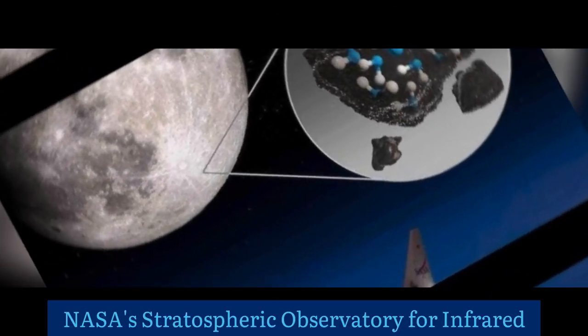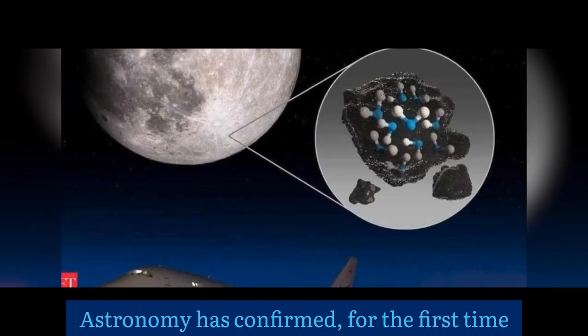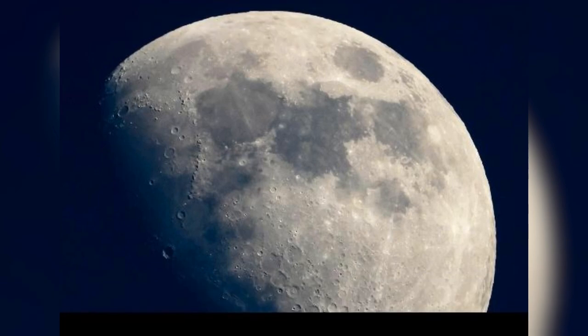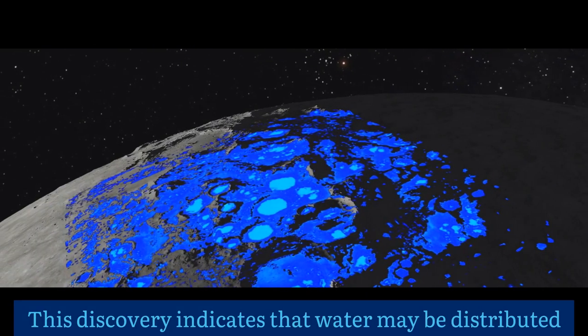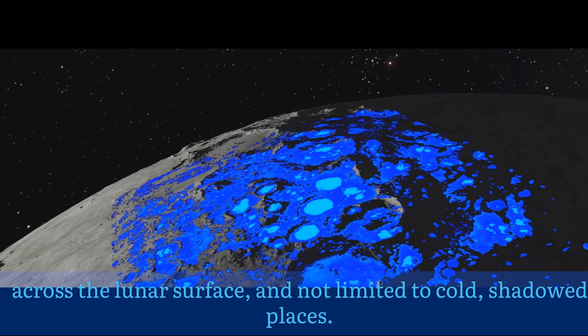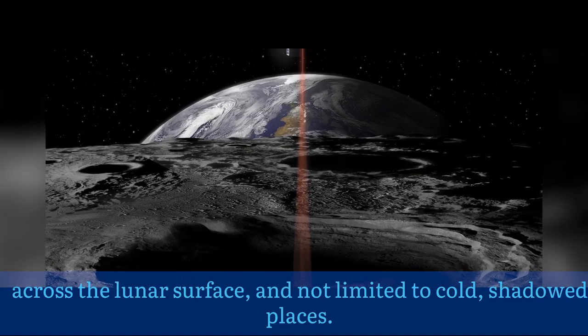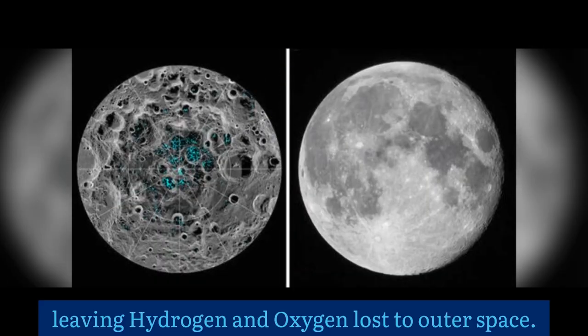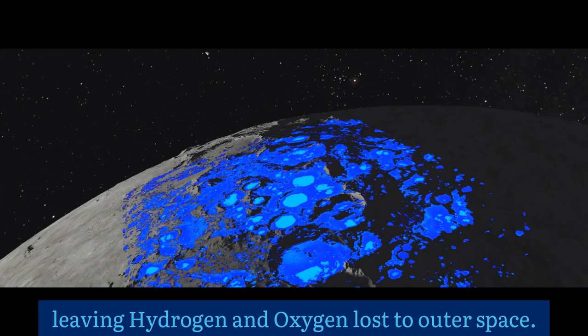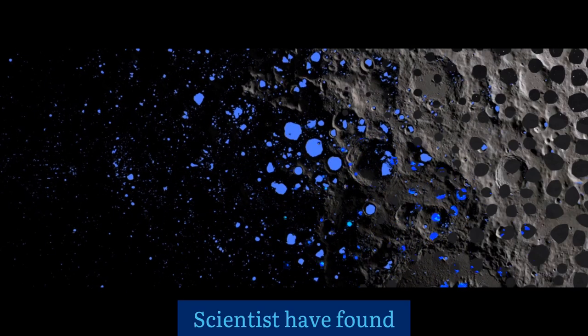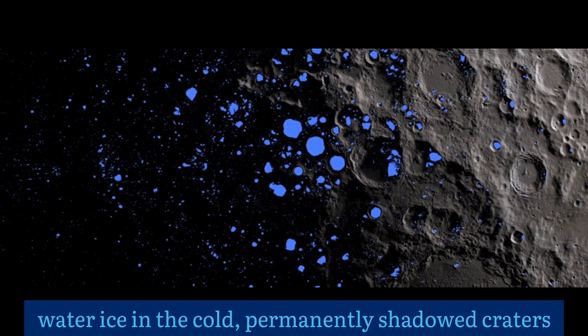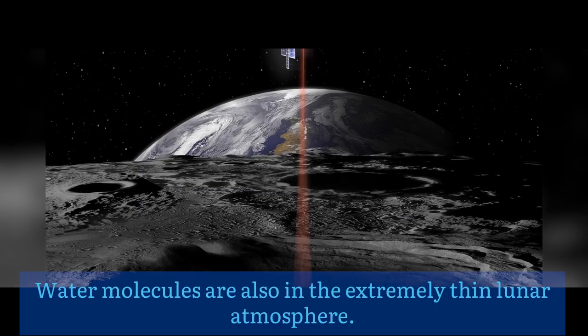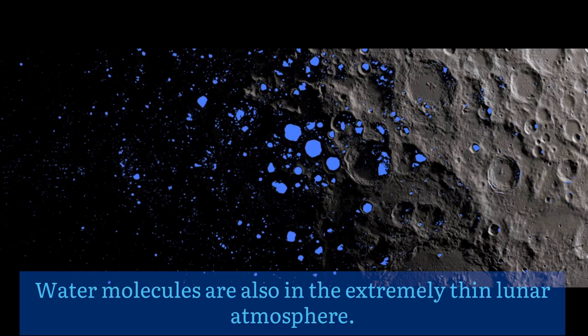NASA's Stratospheric Observatory for Infrared Astronomy has confirmed for the first time water on the sunny surface of the Moon. This discovery indicates that water may be distributed across the lunar surface and not limited to the cold, shadowed places. Gradually, water vapor is decomposed by sunlight, leaving hydrogen and oxygen lost to outer space. Scientists have found water ice in the cold, permanently shadowed craters at the Moon's poles. Water molecules are also in the extremely thin lunar atmosphere.